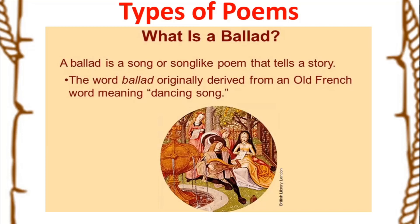Let us go to the next kind of poem — a ballad. What is a ballad? A ballad is a song, or a song-like poem that tells a story. There is a lot of similarity between the kind of poem we are going to learn today — a narrative — and a ballad, but there is a difference. A ballad is like a song, so it might have rhyming words towards the end. The word ballad is originally derived from the old French word meaning a dancing song, so ballads are usually set to dance.